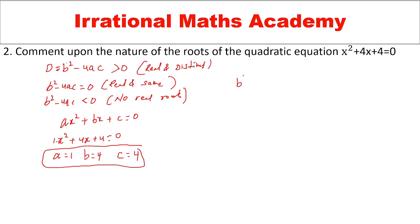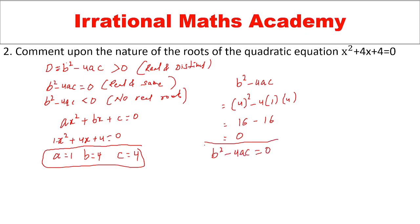Now let me substitute into the discriminant: b squared minus 4ac. b is 4, so 4 squared is 16; minus 4 into 1 into 4 equals 16. So 16 minus 16 equals 0. The discriminant value is 0. So the nature of the roots is real and same roots.